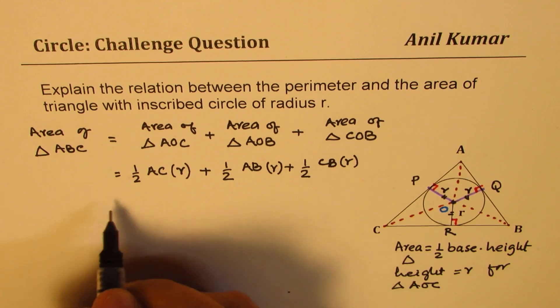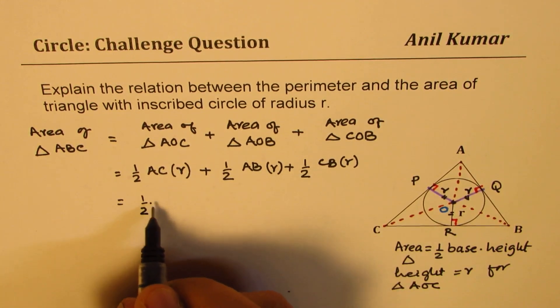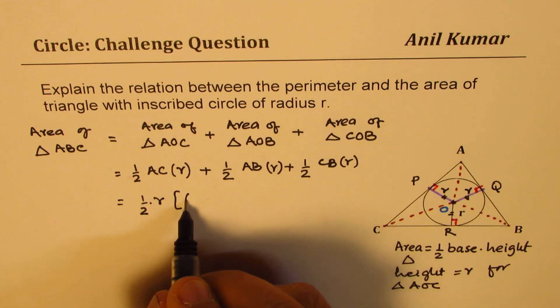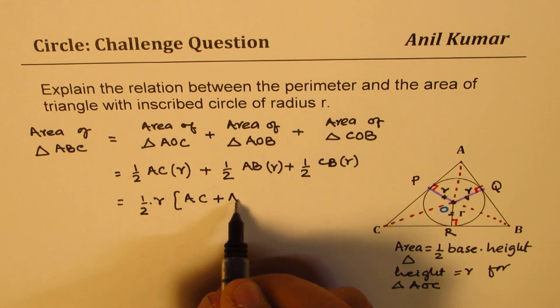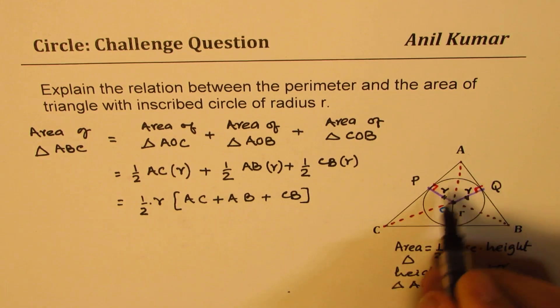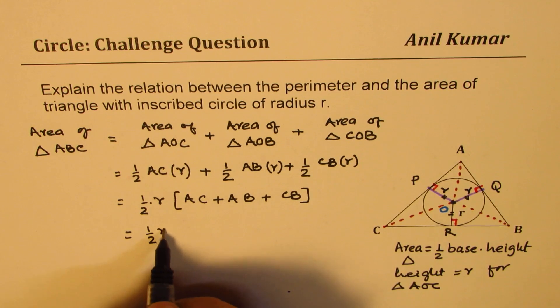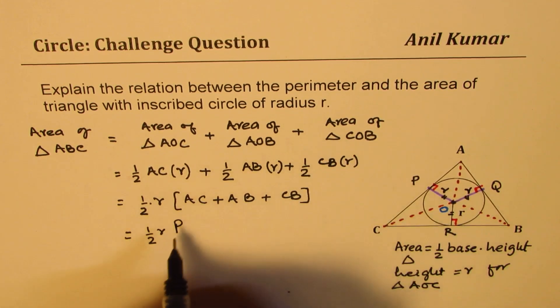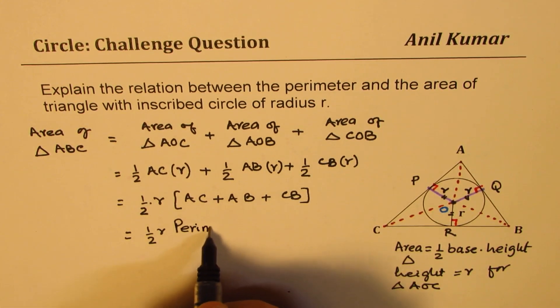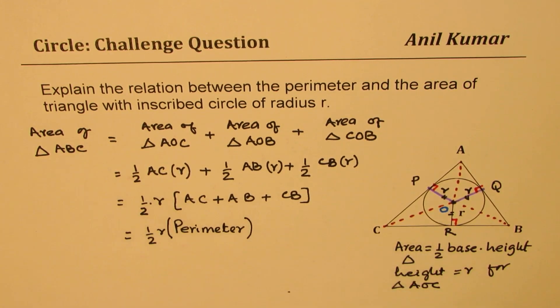Now, you can take half R common. So we have half times the radius R, and what you get here is AC plus AB plus CB. That is the perimeter. So we get half of R times the perimeter is the area of triangle.